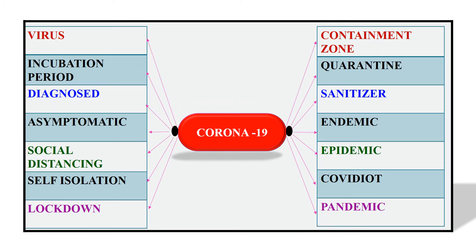In this slide, I have enlisted some of the words which are most commonly used in this pandemic. The words are: virus, incubation period, diagnosed, asymptomatic, social distancing, self-isolation, lockdown, containment zone, quarantine, sanitizer, endemic, epidemic, COVID idiot, and pandemic.